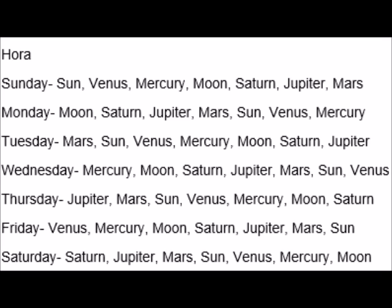Within that day there are 24 hours, and those hours are also ruled — not by the planet which rules the entire day, but those sub-periods converted into hours are ruled by the other seven planets. We are not talking about Rahu and Ketu in this discussion, because in Vedic astrology and Hora, Rahu and Ketu are not taken into consideration.